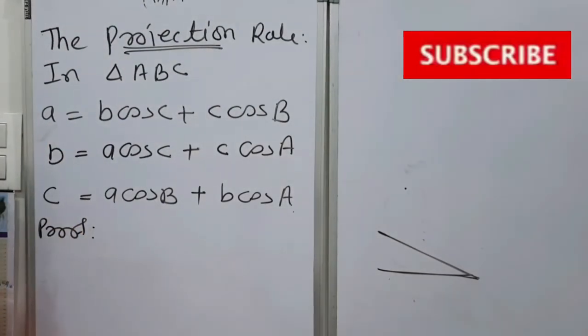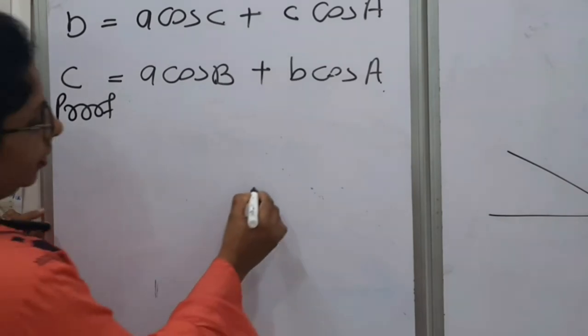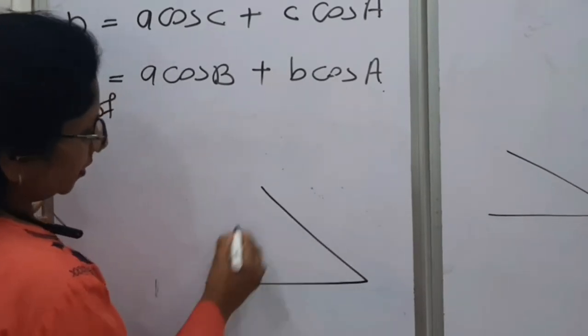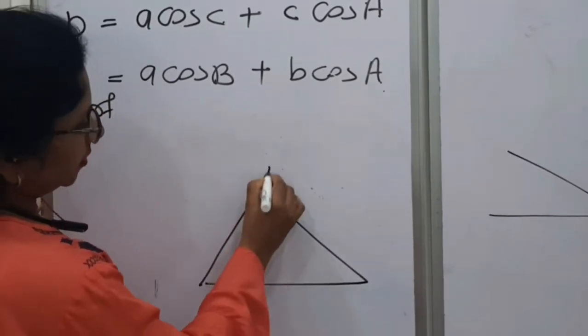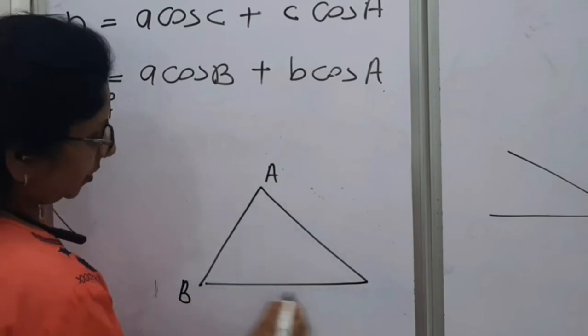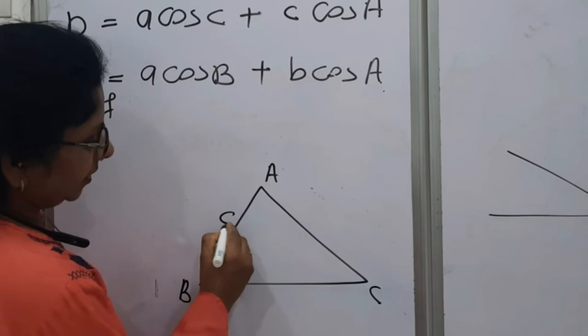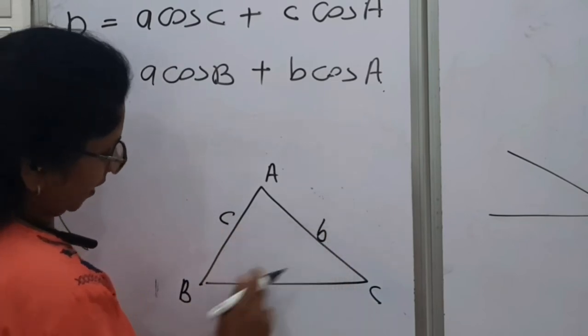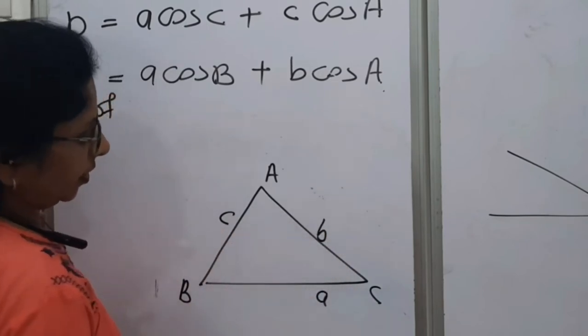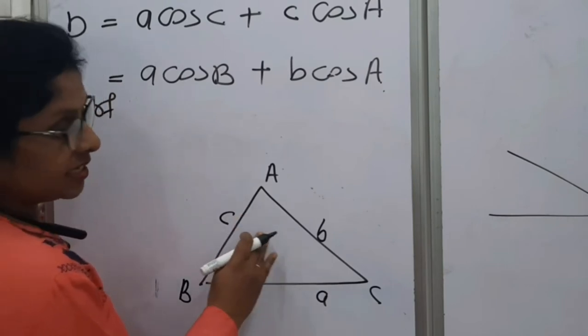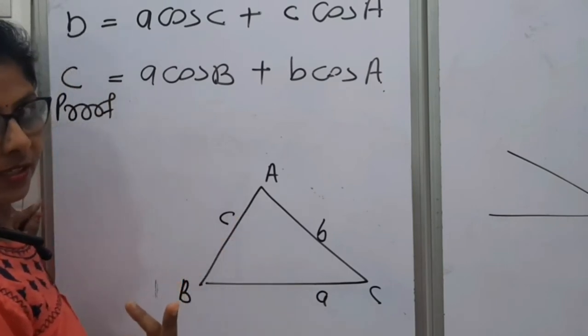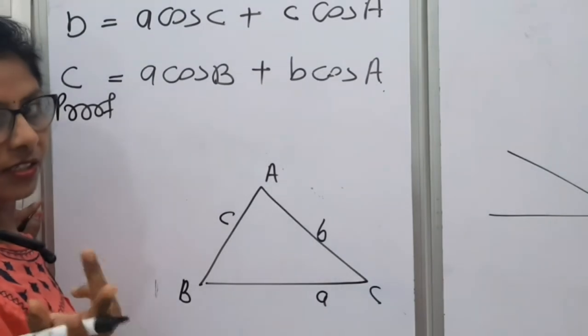To understand this a, we will draw a triangle ABC. A, B, C. We know we have denoted the length of AB as c, length of AC as b, and length of BC as a. Now we are considering three cases. We are going to discuss here three cases.